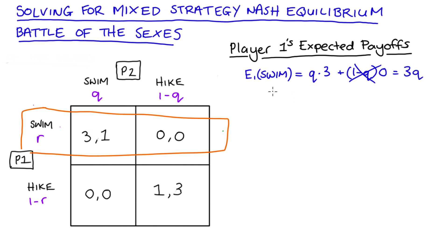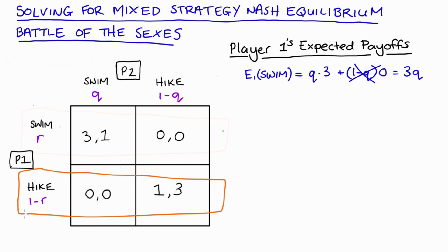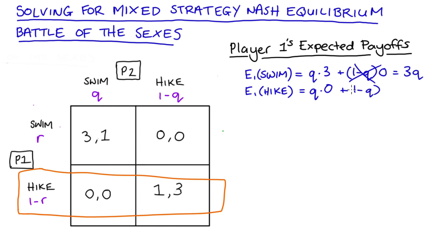We can do the same for hike, which is the bottom row. The expected payoff of player one playing hike is: with probability q, player two plays swim so player one gets zero, and with probability one minus q, player two plays hike so player one gets one. So the expected payoff of playing hike for player one equals zero plus one minus q, which is just 1 - q.